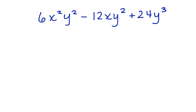Let's look at the number parts of each term first and see if there's something common that we can take out of each of the three terms. 6, 12, 24 all have 6 in common. We can take out a 6.